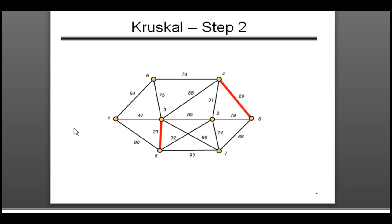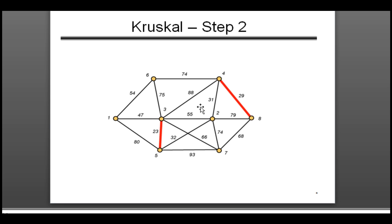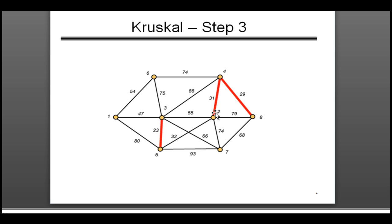We took one set, and this is the second minimum weighted edge, so we take this one. Unlike Prim's algorithm where we grow the whole tree from the same set, here in Kruskal's we randomly take an edge from the forest of the tree and work our way through forming a minimum tree. The third minimum edge is 31. This is one set and this is another set — since these two sets are unequal, we can union them later.